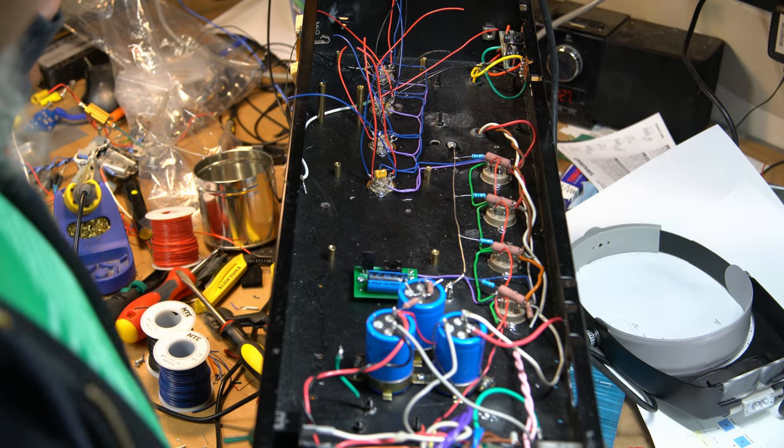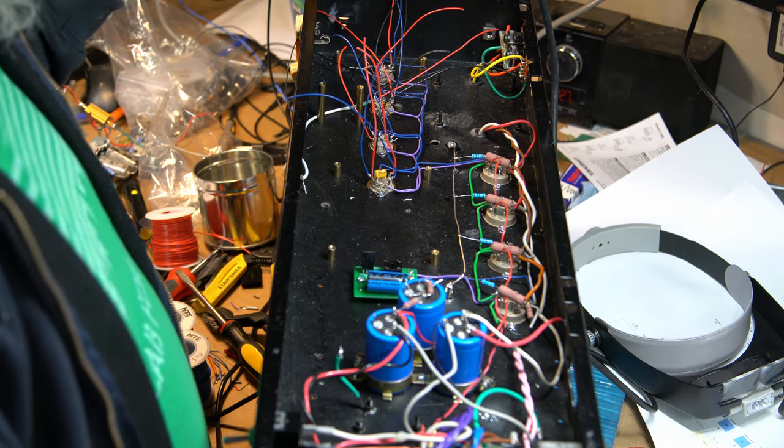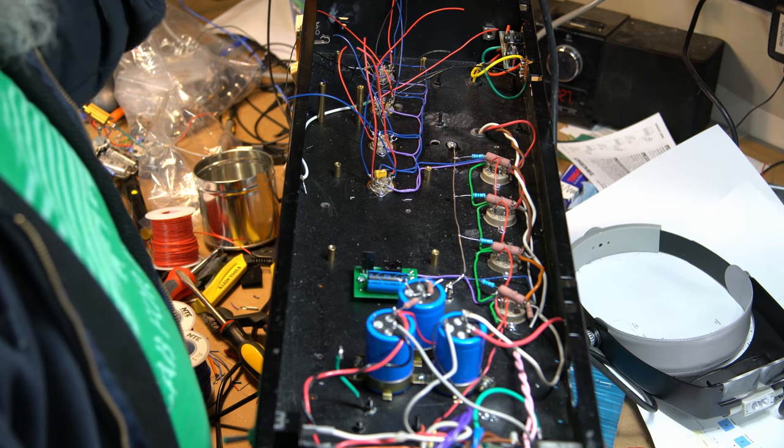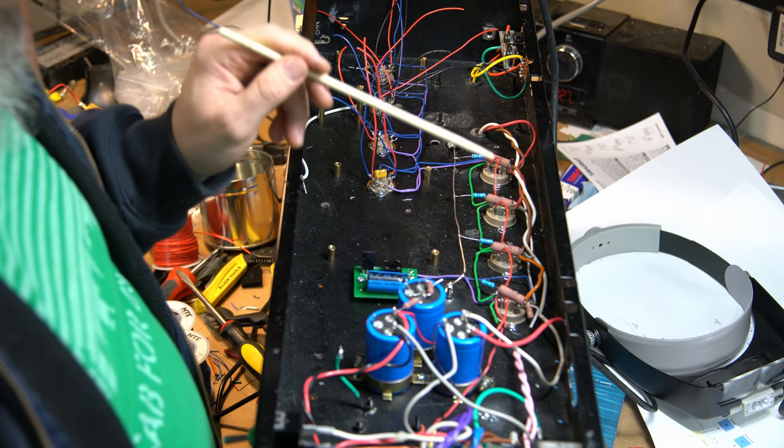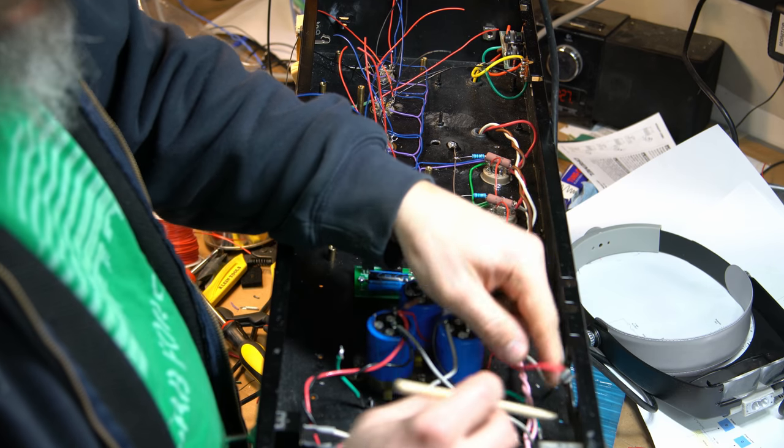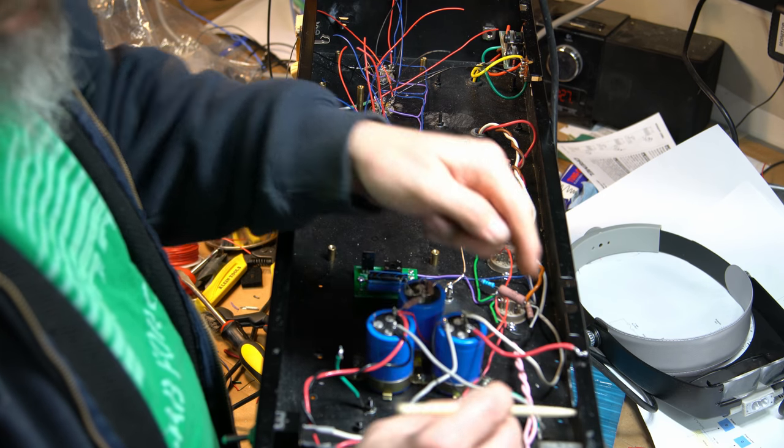Alright, so today I have finished up all the preamp tube wiring and I'll kind of point out some of the stuff with that. Then I finished all the power tube wiring. I still haven't got to figure out how to get a fuse put in here, so we'll get that sorted out eventually, but I will put a fuse in here.